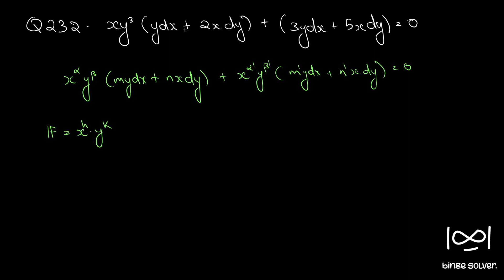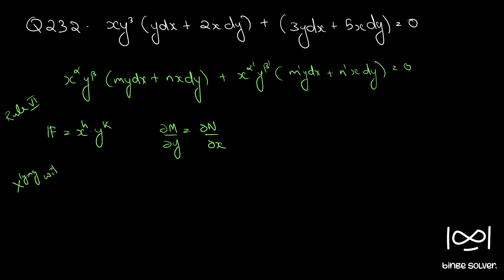We first have to check whether the differential equation is exact or not. Assuming the equation is not exact, we are going to apply Rule 6 to find the integrating factor. If we assume x raise to h and y raise to k is an integrating factor for this differential equation, when we multiply we get an exact differential equation. We then use the property of exact differential equations — ∂M/∂y equal to ∂N/∂x — to find the values of h and k. So we will multiply with x raise to h and y raise to k and rearrange.